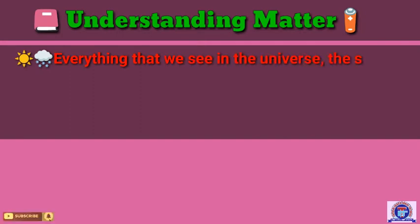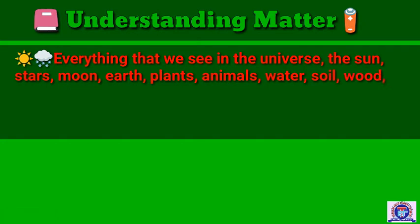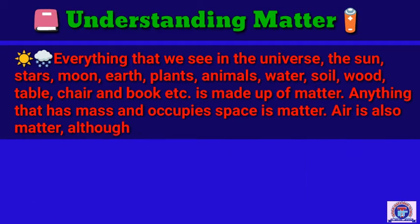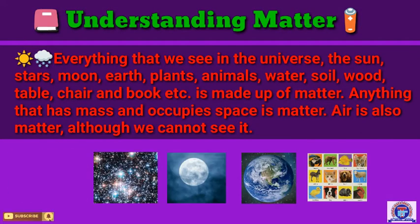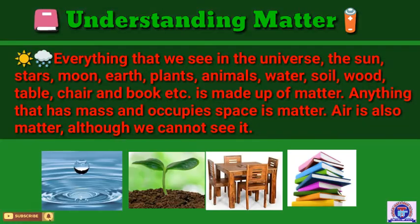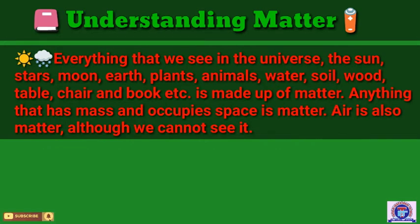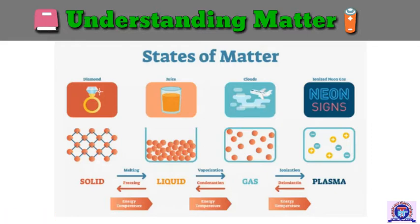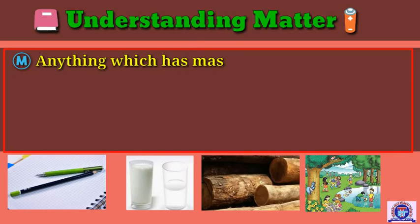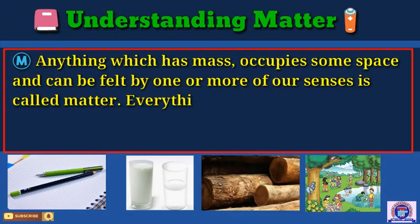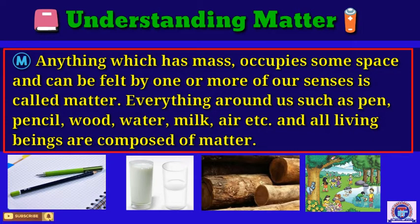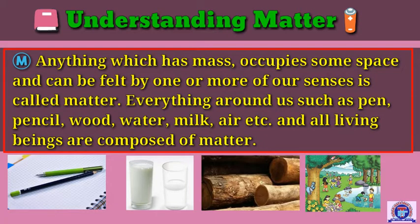Everything that you see in the universe — the Sun, the stars, the Moon, the Earth, planets, animals, water, soil, wood, table, chair, and book — is made up of matter. Anything which has mass, occupies some space, and can be felt by one or more of our senses is called matter. Everything around us such as paint, pencil, food, water, milk, air, etc. is composed of matter.